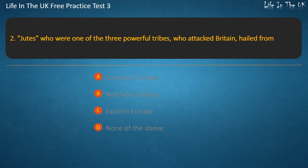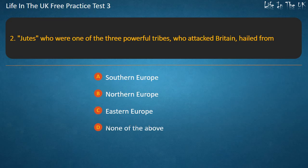Question 2. Jutes, who were one of the three powerful tribes who attacked Britain, hailed from — Southern Europe, Northern Europe, Eastern Europe, or None of the above? Answer: Northern Europe.